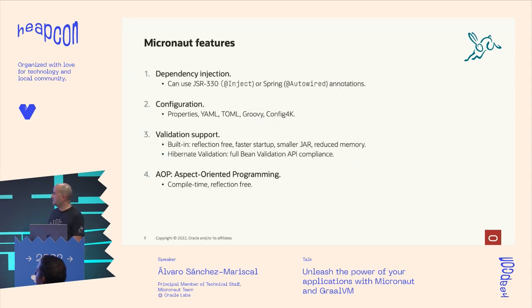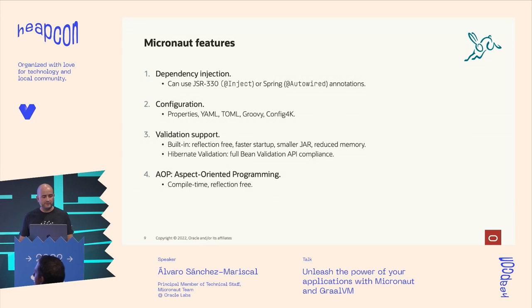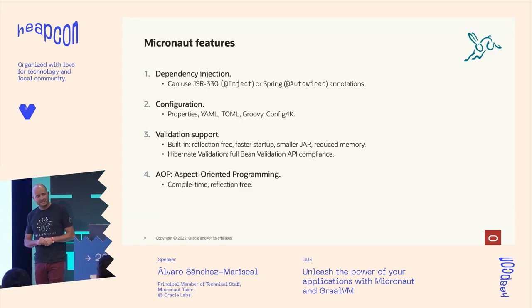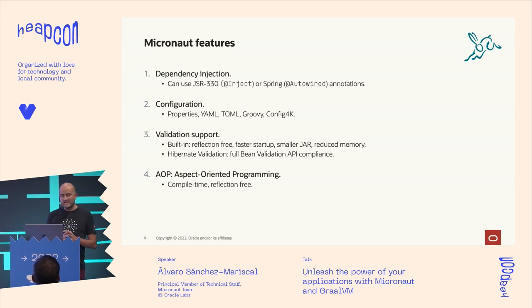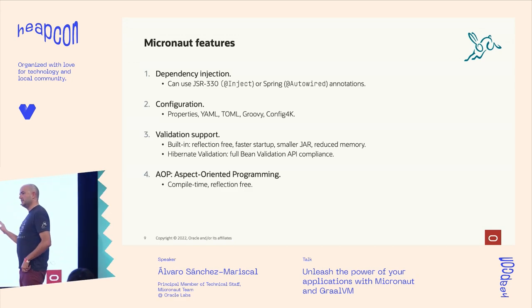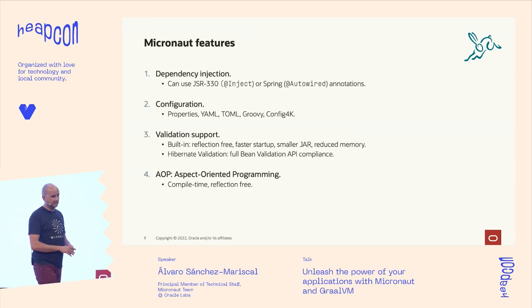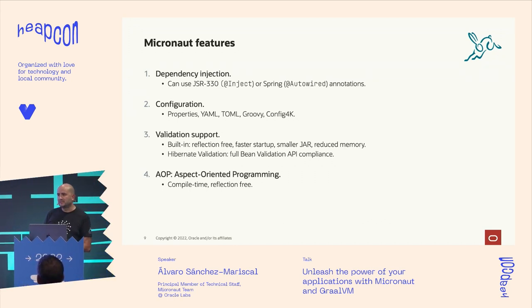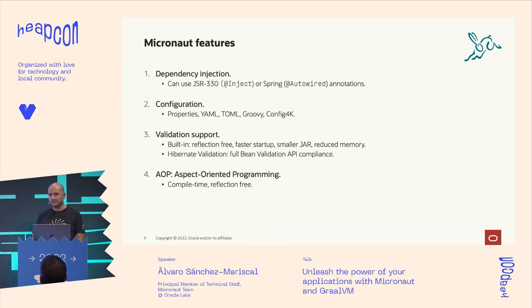The core of the framework is a dependency injection framework based on either JSR-330 annotations like @Inject and @Singleton, or you can use Spring annotations. We have extensive Spring support — we were able to translate about 80% of Spring annotations into Micronaut ones. You can take an existing Spring application, not change the code at all, add a Micronaut runtime dependency to your build, and it will use the Micronaut server to run your Spring application.